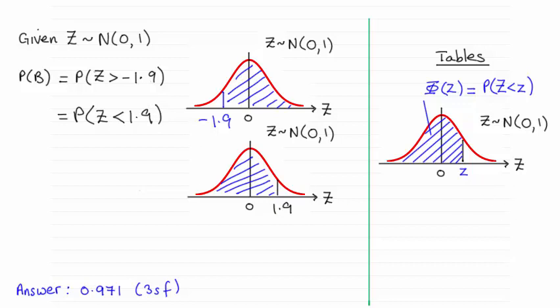And if you use your tables, I've got an extract here, look up your Z value of 1.90 and you should see you get 0.9713.